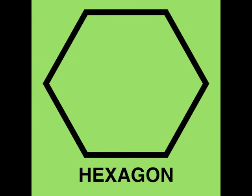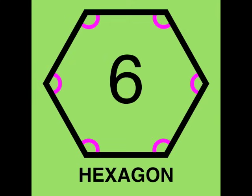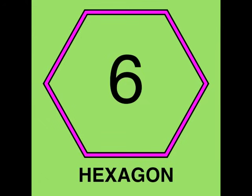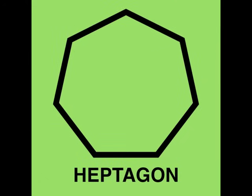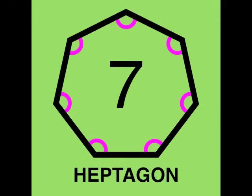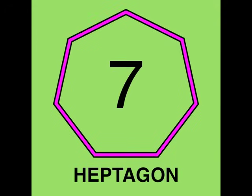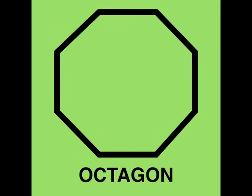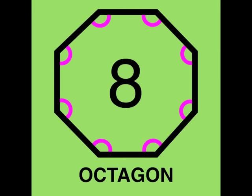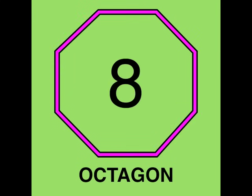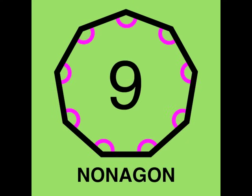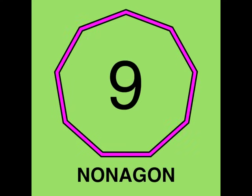A hexagon is a polygon with six angles, six sides. A heptagon is a polygon with seven angles, seven sides. An octagon is a polygon with eight angles, eight sides. A nonagon is a polygon with nine angles, nine sides.